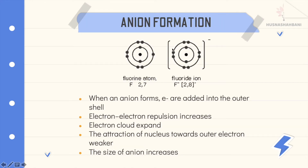For anion formation, for example, one electron is added into the valence shell of the fluorine atom to become the fluoride ion. When an anion forms, electrons are added into the outer shell, so electron-electron repulsion increases — because electrons have the same charge, they repel each other. When you add more electrons, electron-electron repulsion increases and the electron cloud expands.